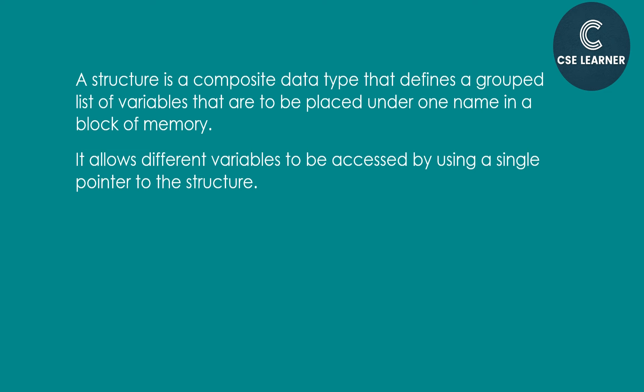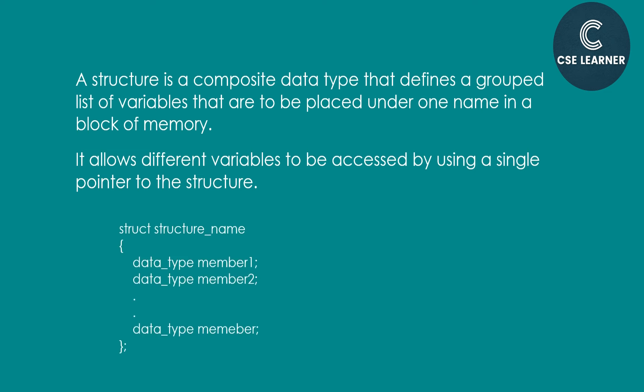How is the structure defined? 'struct' is a keyword, followed by the structure name and curly braces — inside which we can declare variables. For example, 'student' is a structure name. So 'struct' is the keyword and 'student' is the name. Inside the curly braces, we declare variables.